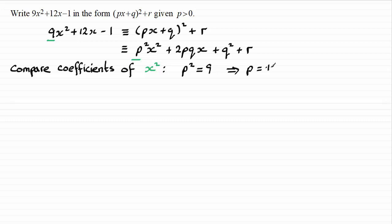which would be normally plus or minus 3. But then we can see from the question, we're told that p is a positive value, it's greater than 0. So therefore, I can see that p is going to be equal to 3.